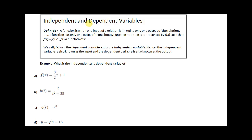We will discuss independent and dependent variables. Recall that a function is when one input of a relation is linked to only one output of the relation, meaning a function has only one output for one input. We represent functions by replacing the y with f of x, so f of x equals y. When we write f of x, we are really saying that f is a function of x.